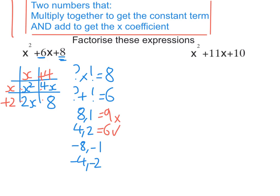So that finally gives me my factorized term, which is x plus 4, the column headings, and x plus 2. And you can always check these by expanding out the brackets to see if you get what you originally got.